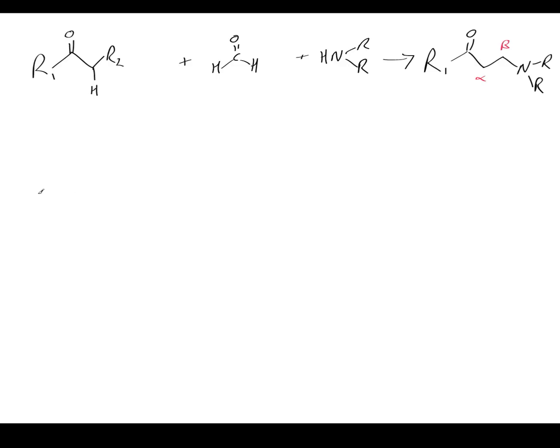So take our amine with nitrogen there and a lone pair of electrons. And then we've got our aldehyde, in this case formaldehyde. That reacts like so to form an intermediate. This has picked up a proton from solution.